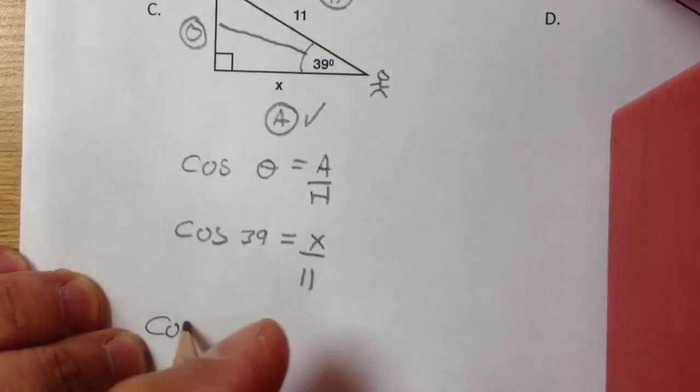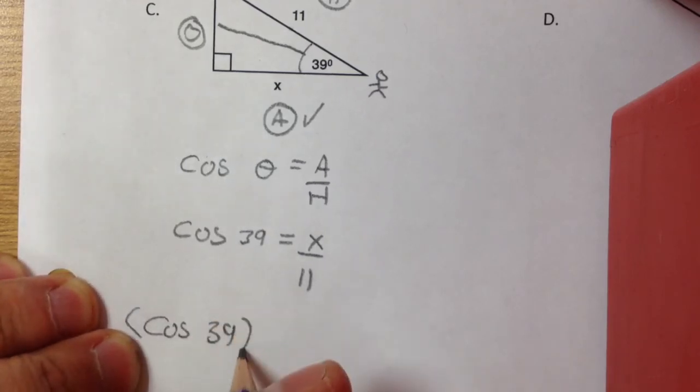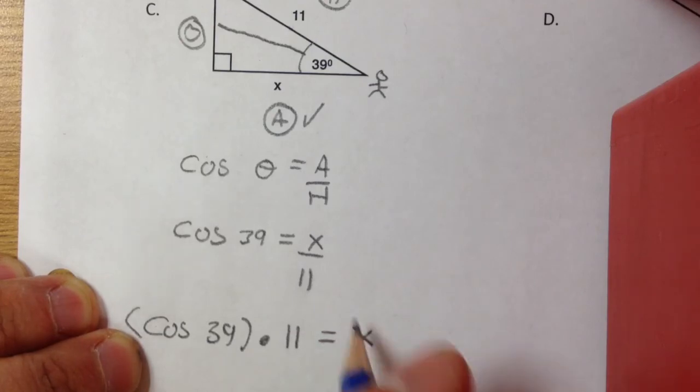So all I've got to do is go cos 39 first, and then times it by 11. All I did was bring the 11 up, and it's now multiplying. In your calculator, make sure you press cos 39 equals, then times it by 11.